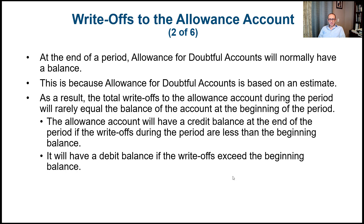In reality it's almost impossible — for example, if we estimate $30,000 in bad debt, it might end up being $32,000 or $29,000. The allowance account will have a credit balance if write-offs during the period are less than the beginning balance, or a debit balance if write-offs exceed the beginning balance. If we estimated $30,000 but actual write-offs turn out to be $33,000, we'll end up with a debit balance that must be recovered in the next estimate.